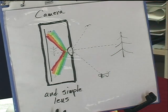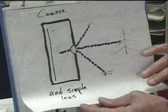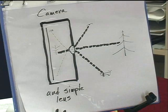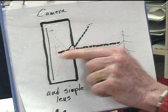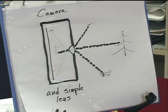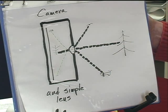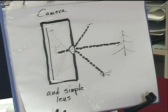A second problem with flat sensors and flat film is the distance to the sensor or the film is much shorter in the center than it is at the edges. So you've got more intensity in the center so you've got to add another element to the lens and things to compensate for that.